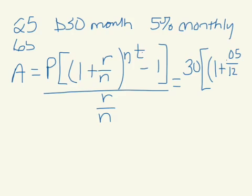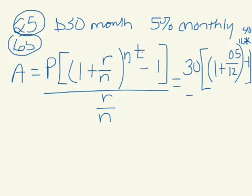And n is how often your account compounds or you deposit the money, which is 12. So we get 12 times your amount of time. From 25 to 65 is 40 years. And that's minus 1, all over 0.05 divided by 12.